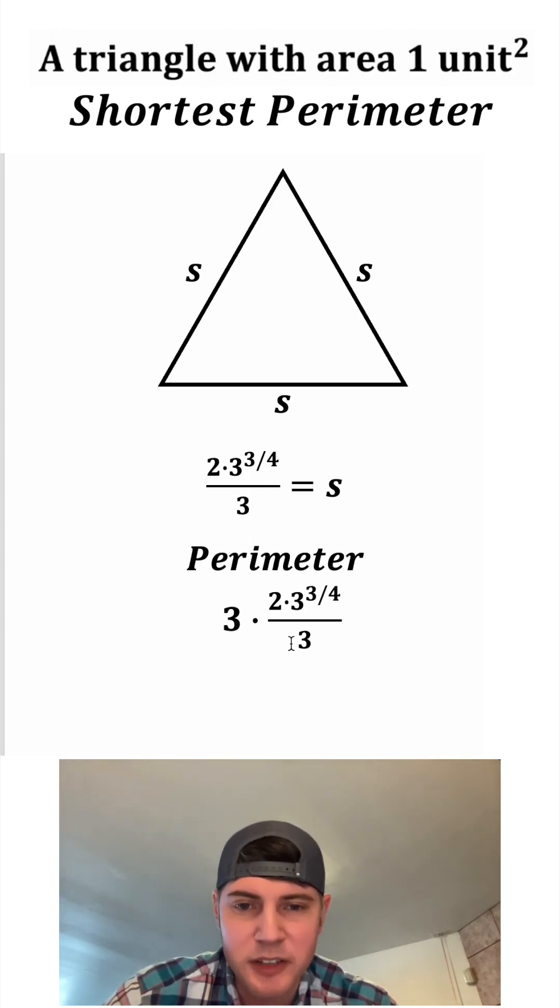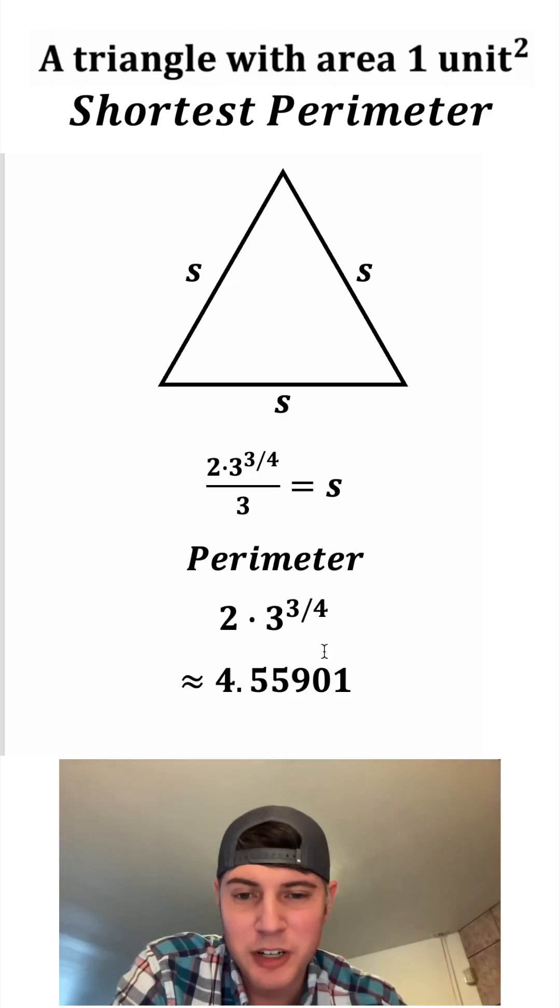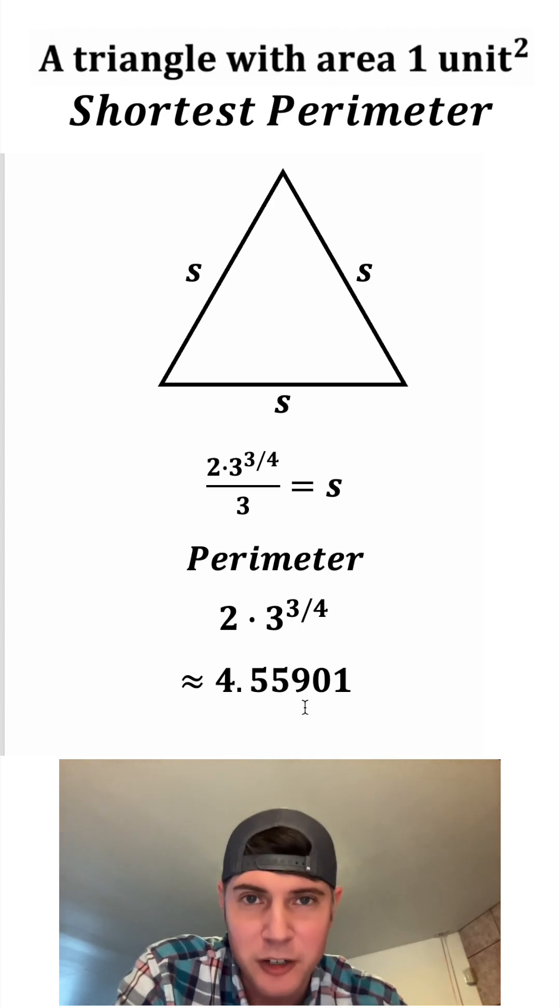And S is equal to this stuff. So we can plug this stuff in for the S. And this three on top will cancel with this three on bottom, leaving us with only two times three to the three fourths power. And that is approximately equal to 4.55901. This is the smallest possible perimeter for a triangle with area equal to one. How exciting.